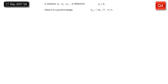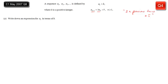We have a sequence where the first term a1 equals k, where k is some positive integer. And we have the recursion relation: a(n+1) equals 3 times an plus 5. That basically means any term is 3 times the previous term plus 5. Part a wants an expression for a2 in terms of k. So a2 is 3 times a1 plus 5. Since a1 equals k, we get a2 equals 3k plus 5.